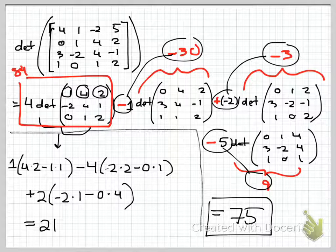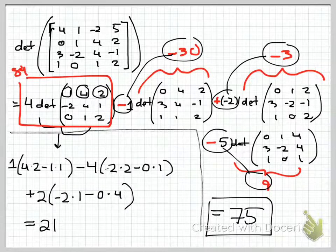I'm not going to do all the rest of this here, but this determinant comes out to be -30, this one will come out to be -3, and this determinant comes out to be 9. Taking 84 plus -1 times 30 plus -2 times -3 minus 5 times 9, all that calculates out to equal 75. So the determinant of that 4 by 4 was 75.